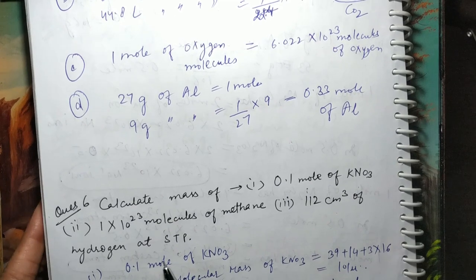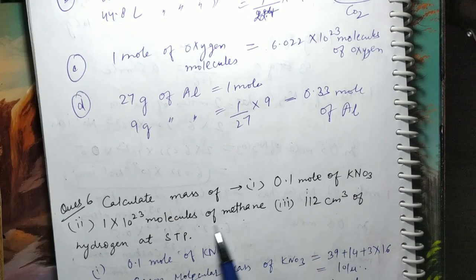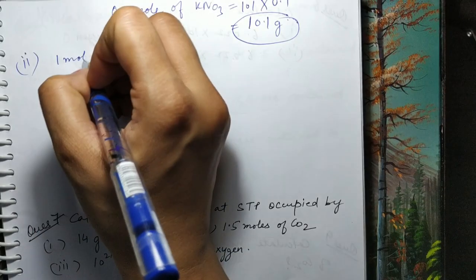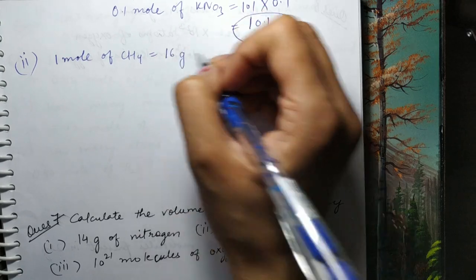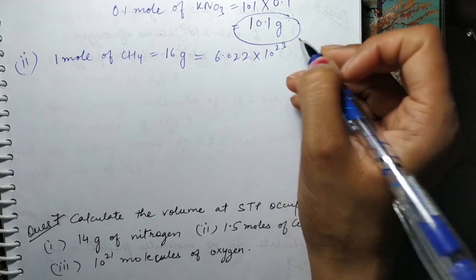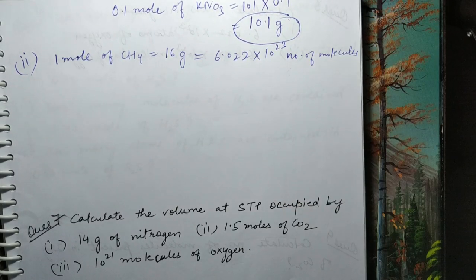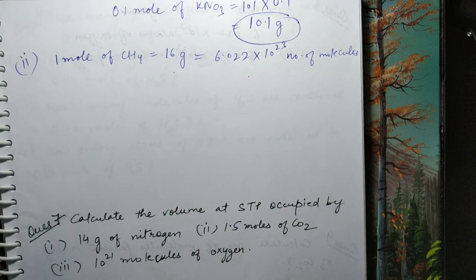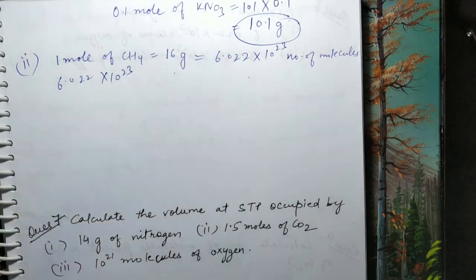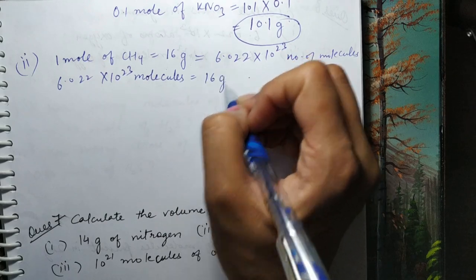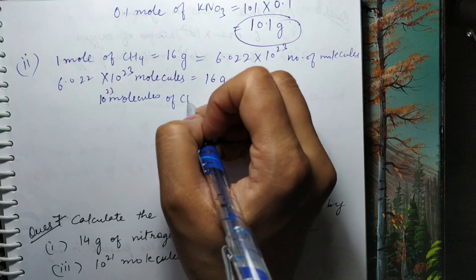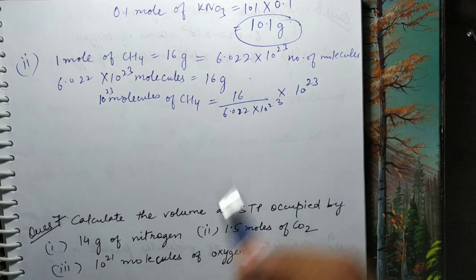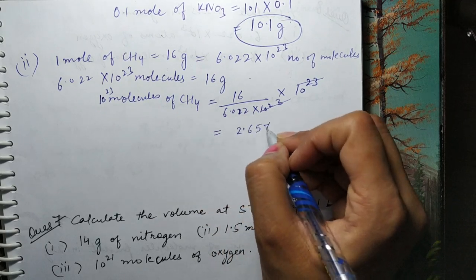Second part tha: 10²³ molecules of methane. 1 mol of methane = 16 gram and Avogadro's number of molecules. Humein molecules diye hue hain, to hum inhe correlate karenge: 6.022×10²³ molecules is equal to 16 gram. So 10²³ molecules of methane is equal to 16 divided by Avogadro's number, into 10²³ — yeh calculate karke aa jayega 2.657 gram.